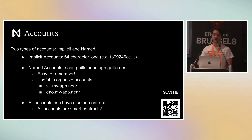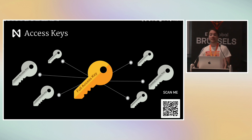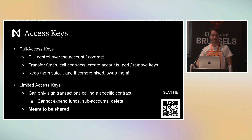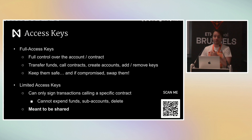If you're more interested to learn more about this, I recommend you scan the QR code which will take you to our documentation. The second important thing about NEAR accounts is that they have a very interesting access key model. You might be used to accounts having just one key, but in NEAR accounts can not only have multiple access keys, but we also have two types: full access keys and limited access keys. Full access keys are the ones you're used to in every ecosystem — they have full control over the account, allowing you to transfer all funds, call contracts, create accounts, and add and remove keys.